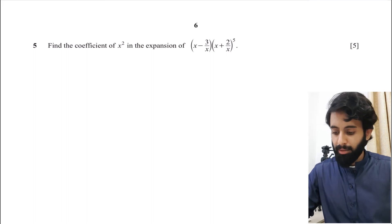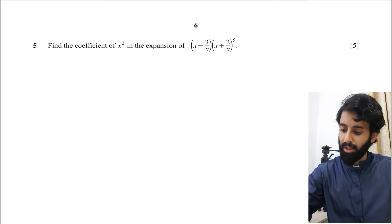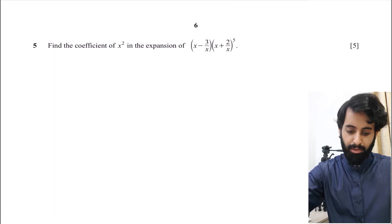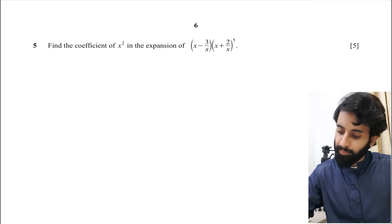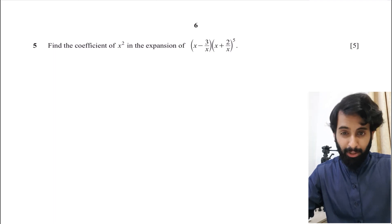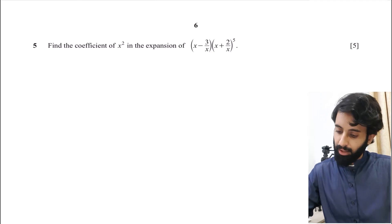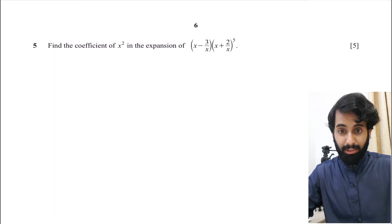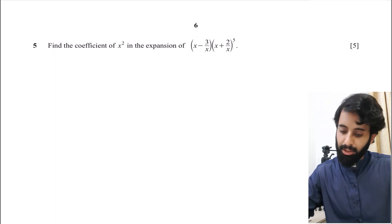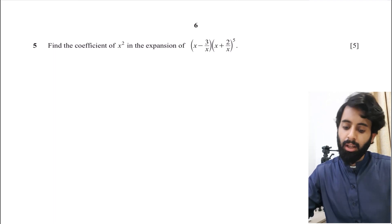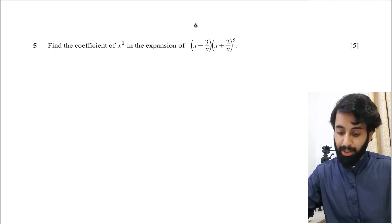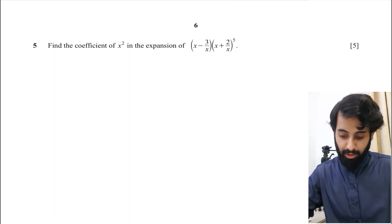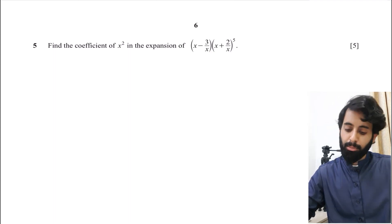In this video we're going to be solving another question related to binomial expansion. This is a question from October/November 2020 Paper 1 Variant 2. It's a five-mark question and we'll be able to cover a lot of concepts. It says: find the coefficient of x² in the expansion of (x − 3/x) multiplied by (x + 2/x) to the power five.